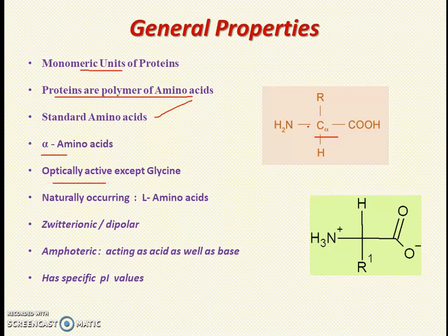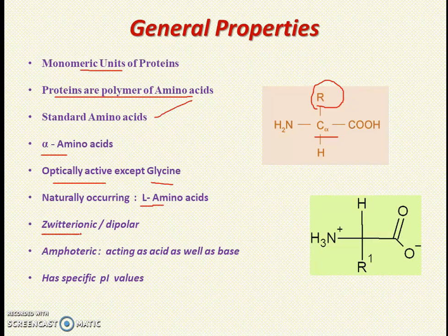Amino acids are optically active because they contain a chiral carbon, except glycine — for glycine the side chain is simply hydrogen, so with two hydrogens glycine is not asymmetric and therefore not optically active. Naturally occurring amino acids are more often L amino acids; D amino acids also occur in some bacteria. Amino acids are dipolar or zwitterionic because they contain both positive and negative charge in one molecule.